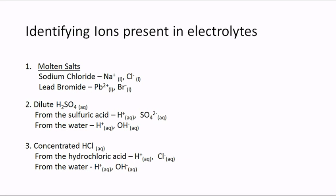You need to be able to identify the ions present in an electrolyte. An electrolyte could be a molten salt — meaning you heat a solid salt until it melts — and the ions become free to move. In molten sodium chloride we have Na⁺ and Cl⁻ ions (state: liquid). In molten lead(II) bromide we have Pb²⁺ and Br⁻ ions.